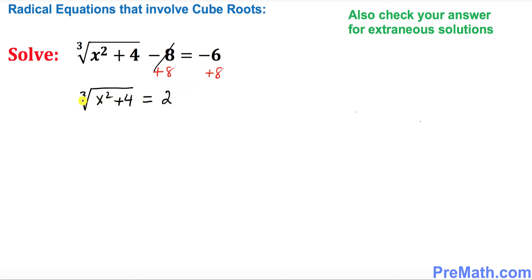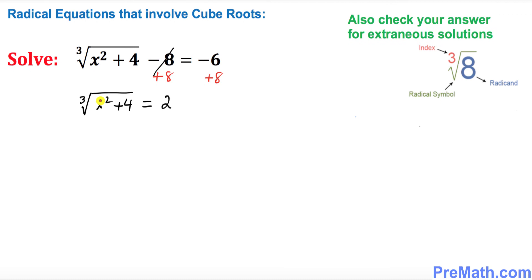Just keep in mind that the cube root has an index of 3. If you are not sure what an index is, I put down the body parts of a radical right here — the index is this small 3 over here.